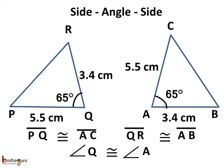The second criterion of congruency is the SAS rule, that is side-angle-side. If two sides and the angle included between them of a triangle are equal to the two corresponding sides and the included angle in the other triangle, then the two triangles are congruent.